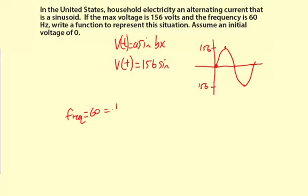And that's 1 over the period. And we said before the period is 2π divided by B. So the frequency is B divided by 2π. So 60 is B divided by 2π.